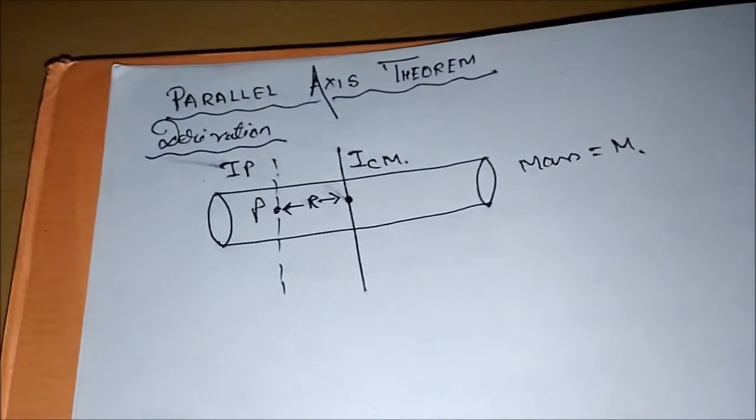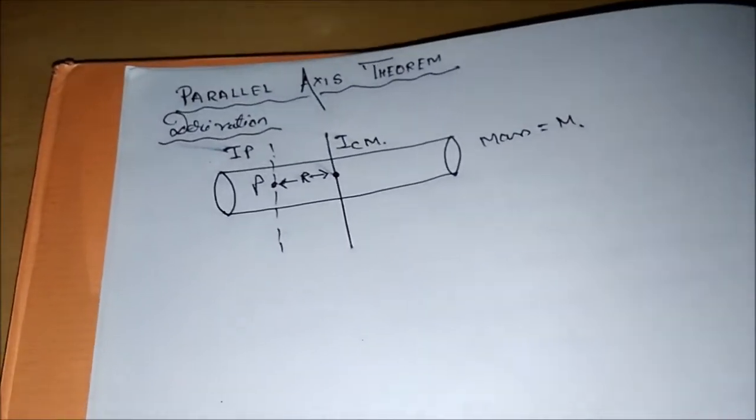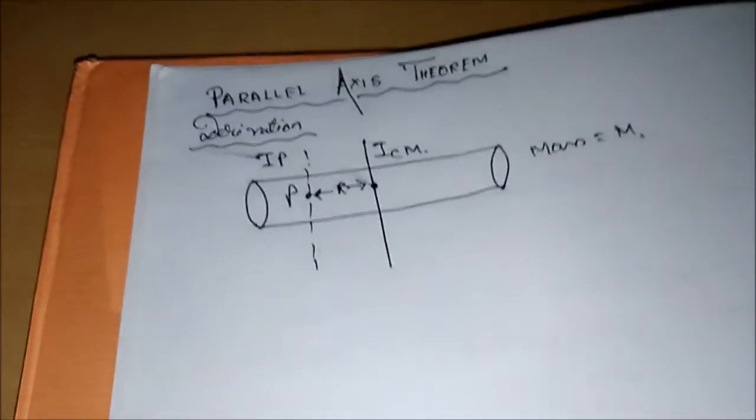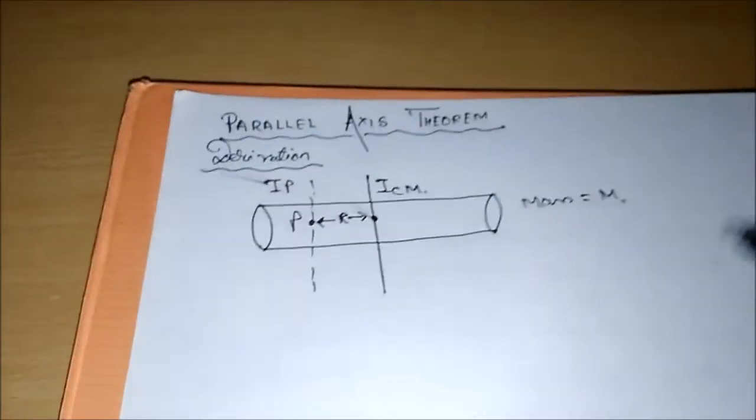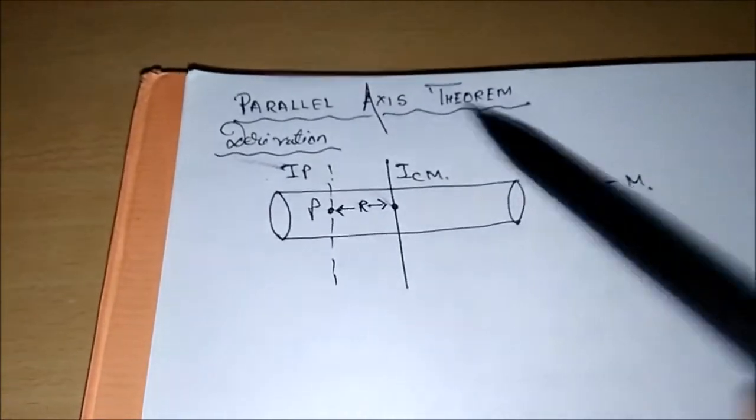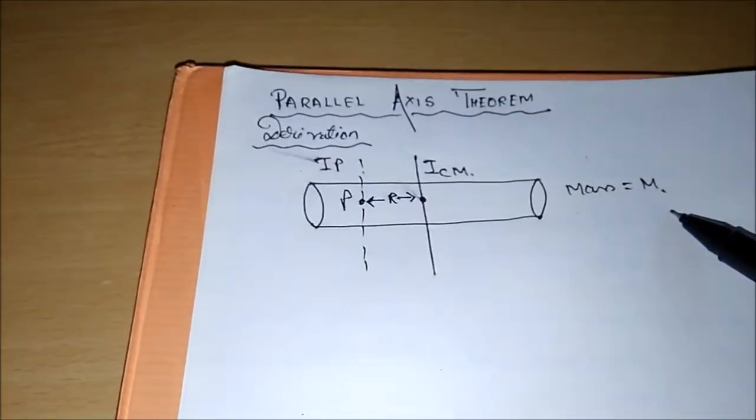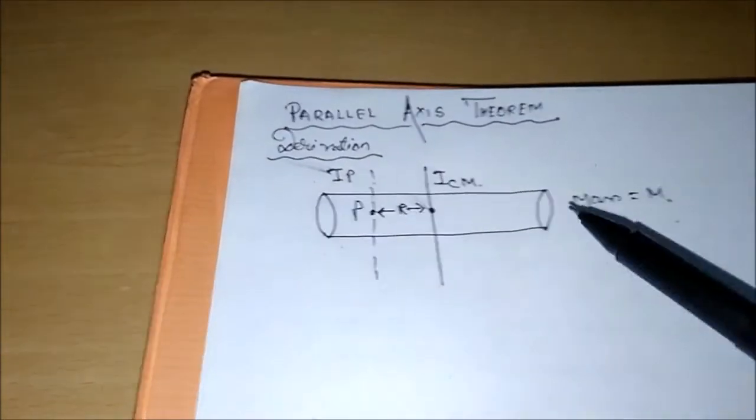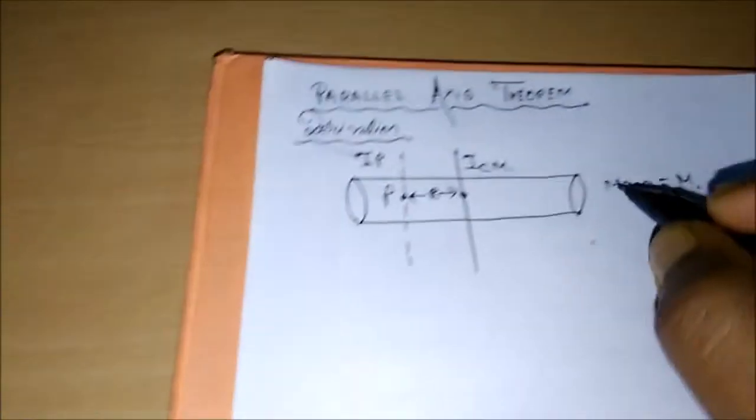So here we are on a blank canvas. Just follow the drawing I have drawn. Well, I'm not very good at art, so sorry for that, but just bear with me here. Suppose this is a cylinder of mass M.